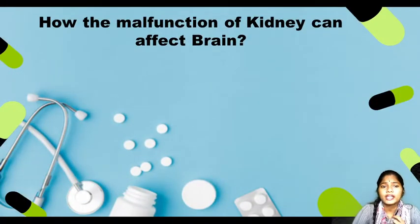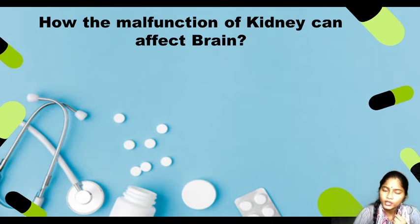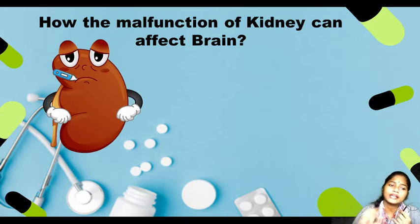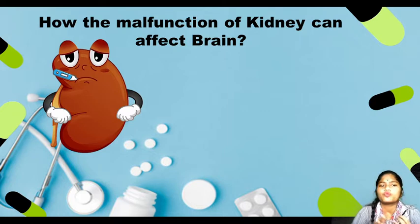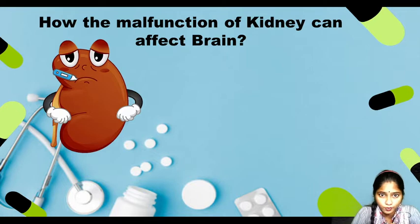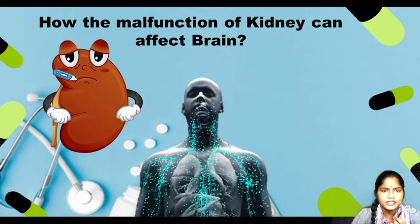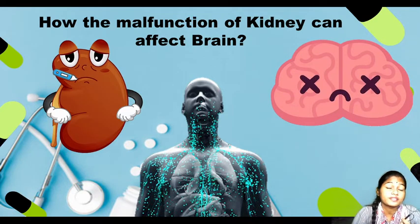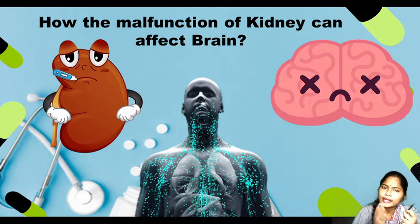How does the malfunction of the kidney affect the brain? As I mentioned, one organ's function is related to another. If the kidney is not functioning properly, the brain will be affected. The kidney's job is to remove waste products from our body. If it can't do that, toxins and waste products will accumulate in the body, and the brain will not function correctly — because waste products are harmful. So if even one organ fails to perform its work perfectly, the full body will be affected.